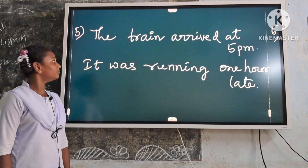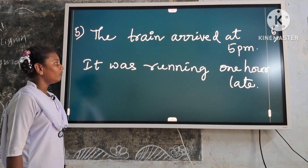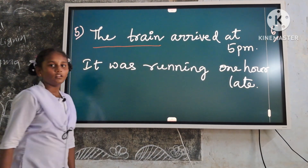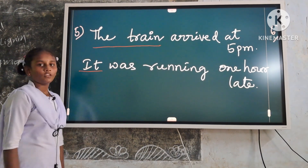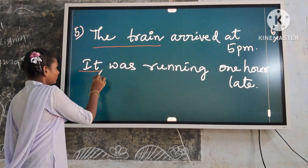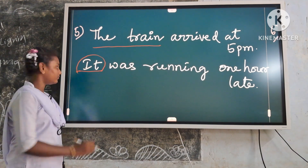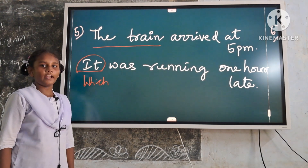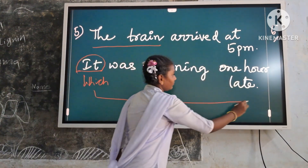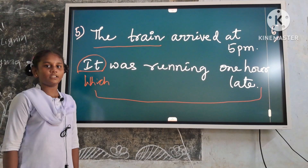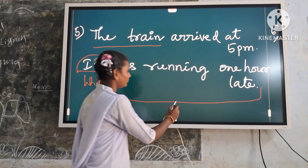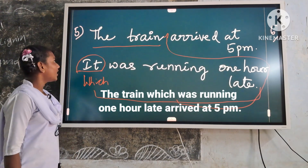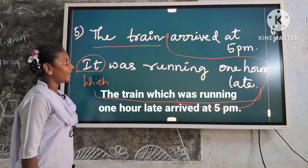Now fifth example: The train arrived at 5 pm. It was running one hour late. Here the noun phrase is 'the train.' Round off the related pronoun in the second sentence. Replace it with which. Keep the entire second sentence in the bracket. Keep the entire second sentence beside the first identified noun phrase of things. Now the answer is ready: The train which was running one hour late arrived at 5 pm.